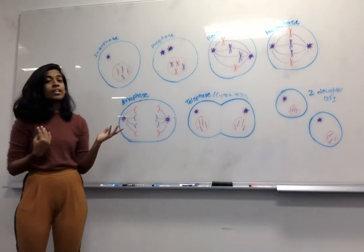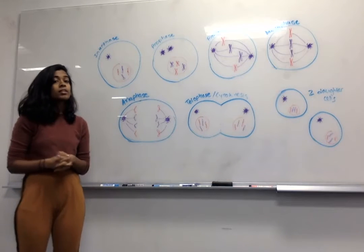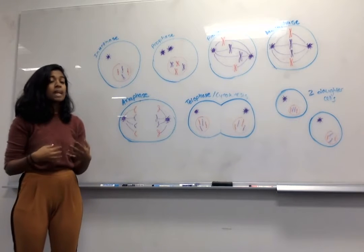Then, in prometaphase, the chromosomes continue condensing, and the kinetochores appear, which are protein complexes associated with centromeres, where the mitotic spindle attaches.